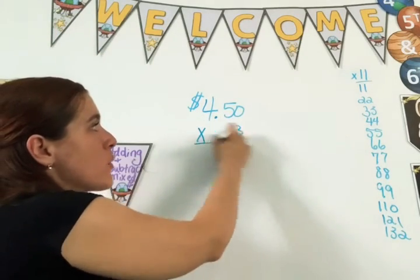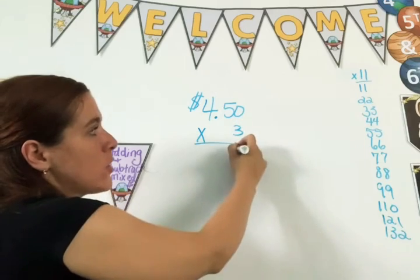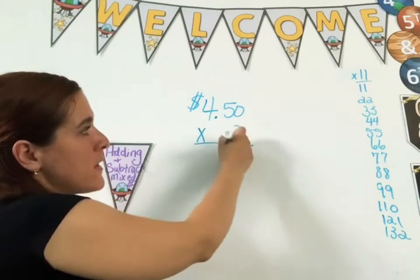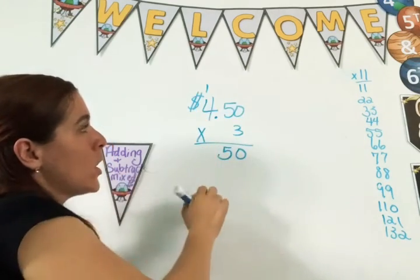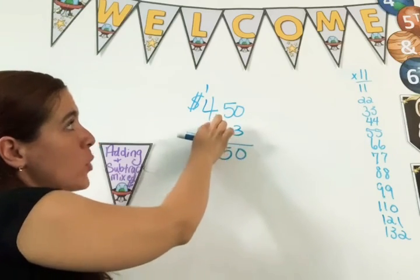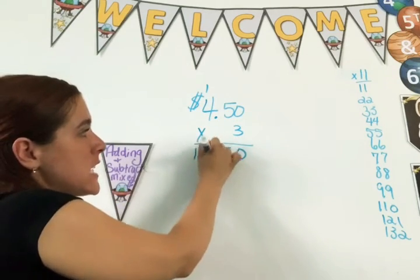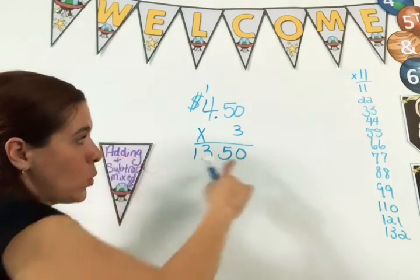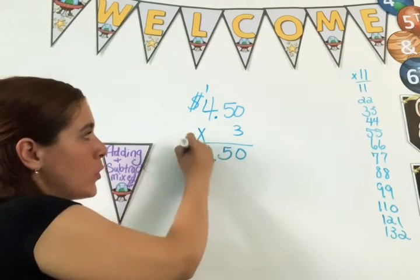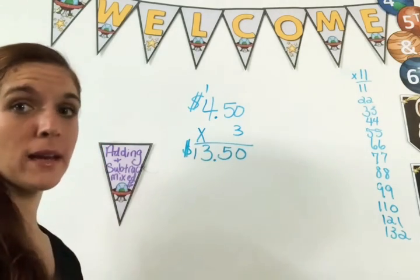Three times zero is zero. Three times five is 15. Put your one up there. Three times four is 12 plus one is 13. And remember what you do? One, two, punto for your money.